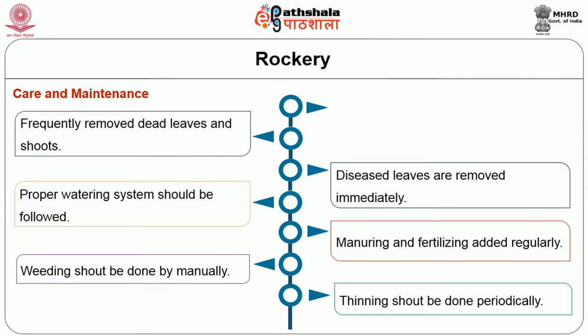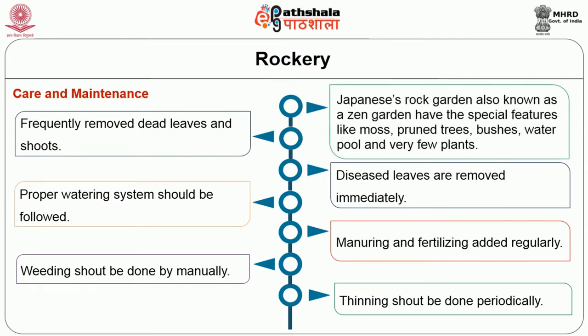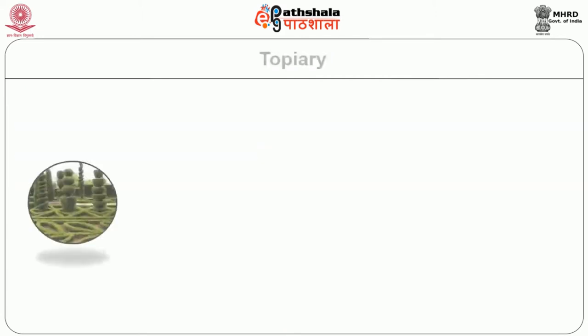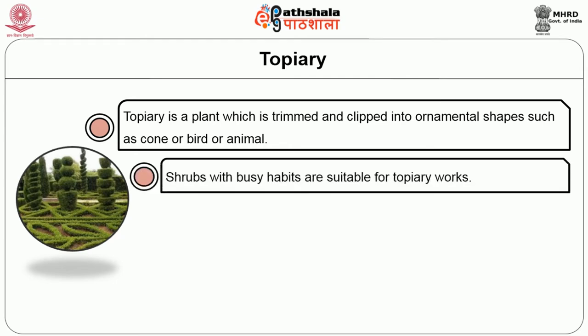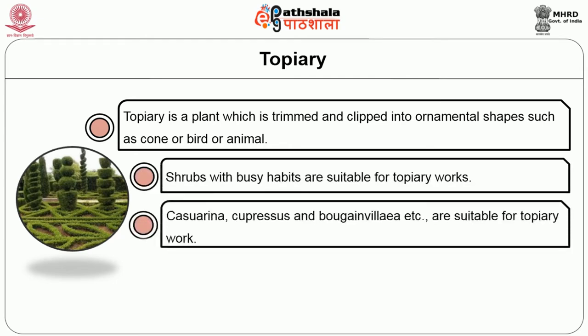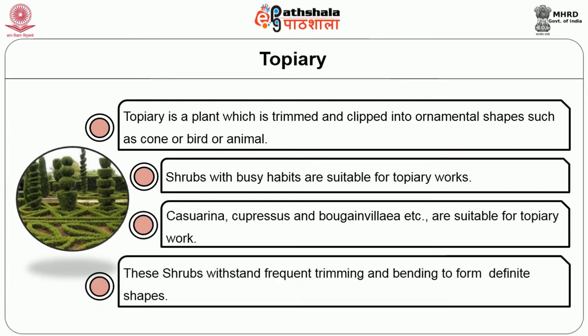Japanese rock garden, also known as Zen garden, has special features like moss, pruned trees, bushes, water features and very few plants. Topiary is a plant which is trimmed and clipped into ornamental shapes such as cones, birds or animals. Shrubs with bushy habits are suitable for topiary work. Casuarina, Cupressus and Bougainvillea etc. are suitable for topiary work. These shrubs withstand frequent trimming and bending to form definite shapes.